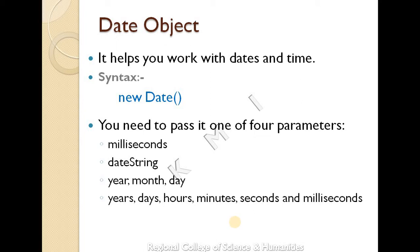The next built-in object is the date object. It helps you work with dates and times. The syntax is: x = new Date(). You can also pass parameters such as milliseconds, a date string, or year, month, and day.